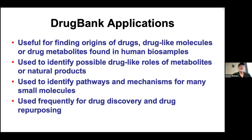If you are doing metabolomics, DrugBank allows you to find the origin of drugs, drug metabolites, or drug-like molecules that might be found in urine, biosamples, or blood. By looking for similarities between a product found in a plant and a known drug, you might be able to identify roles of certain metabolites — thinking, 'this looks a lot like a drug, maybe it has the same target or physiological role.' Because it also has pathways, it helps understand mechanistic or pathway processes, and its main purpose has evolved to support drug discovery and repurposing.